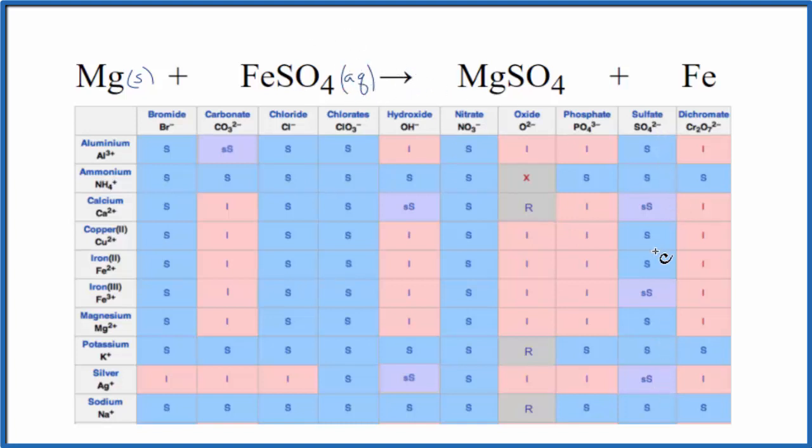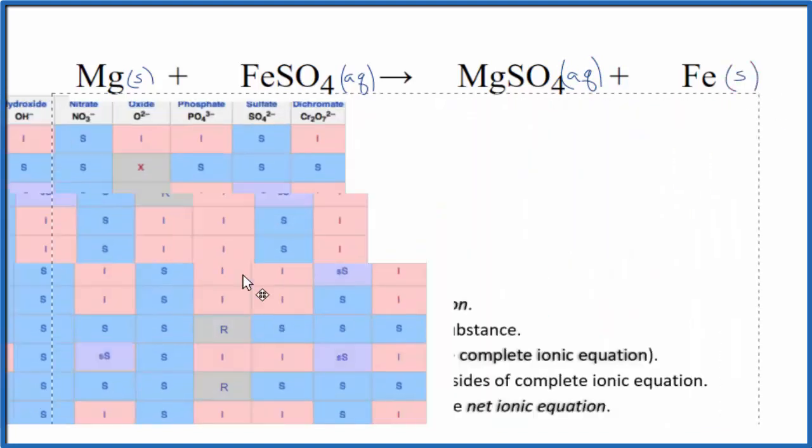Most of the sulfates are soluble. If we find magnesium sulfate here, that's also soluble. So that's going to be aqueous. And then Fe, that's solid iron metal.